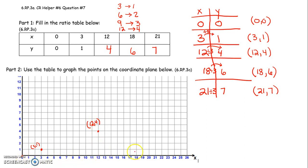18, 6. 18 right. 1, 2, 3, 4, 5, 6 up. That would be 18, 6.